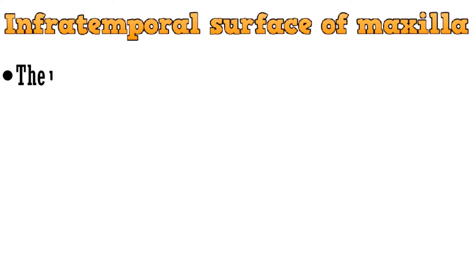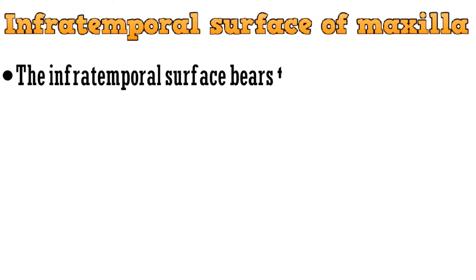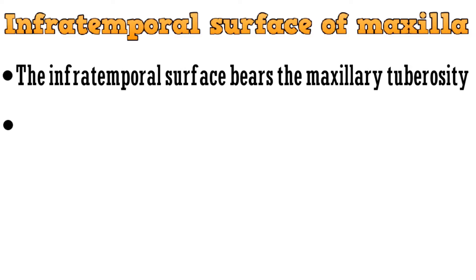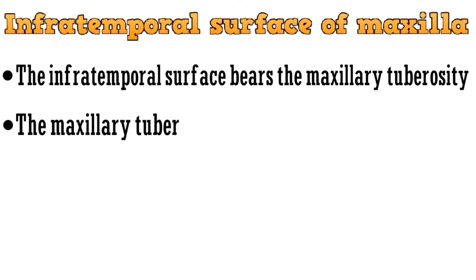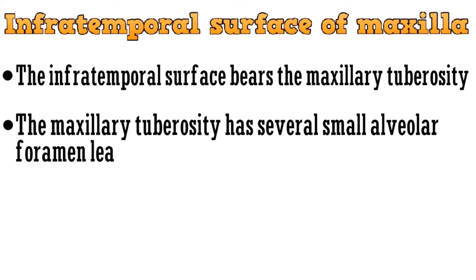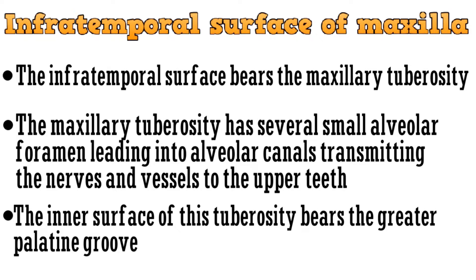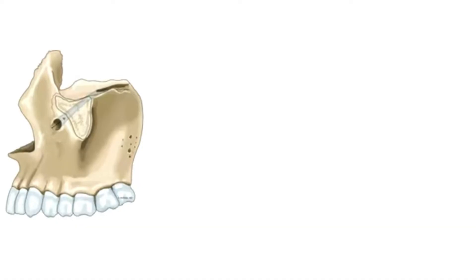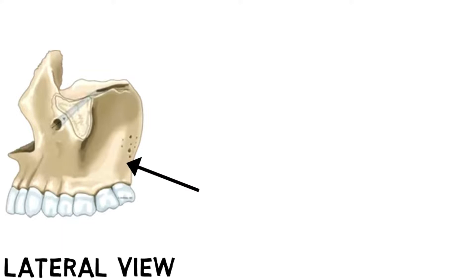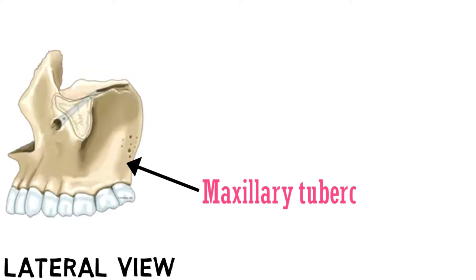Next is the infratemporal surface. It bears the maxillary tuberosity, which has several small alveolar foramina leading into alveolar canals transmitting nerves and vessels to the upper teeth. The inner surface of the tuberosity bears the greater palatine groove. In the lateral view of maxilla, the maxillary tuberosity is present, and the small holes visible are the alveolar canals.